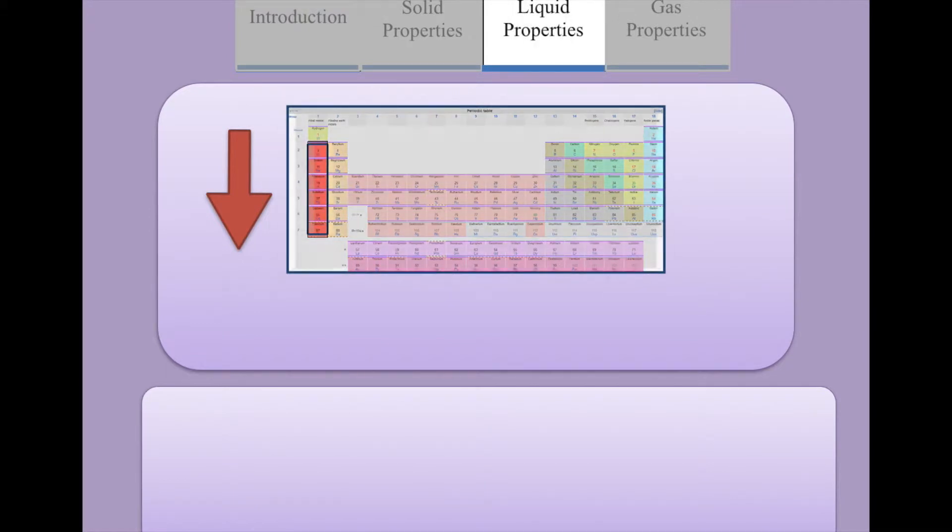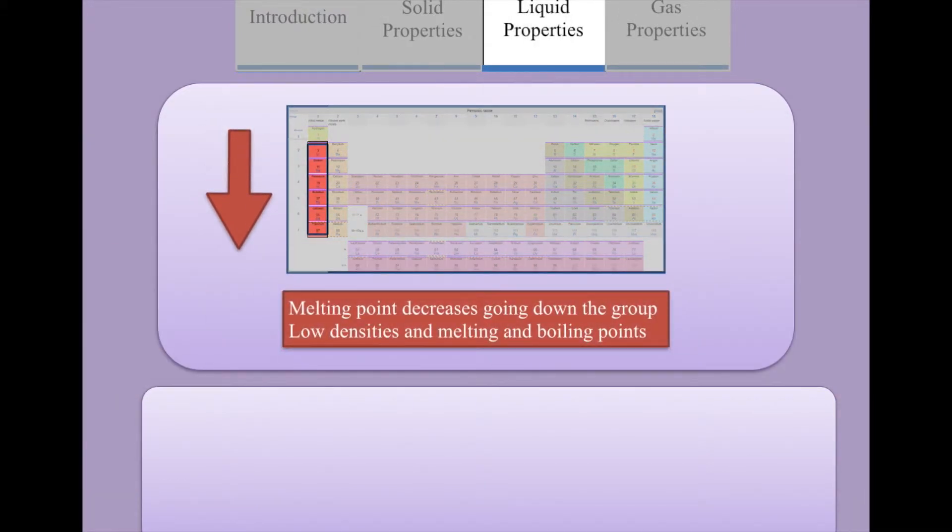Delocalized electrons moving down the table also cause the metallic bonds to become weaker, so the metal can easily melt and boil.